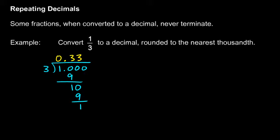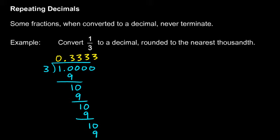We bring down this 0. How many times does 3 go into 10? Three times. We multiply: 3 times 3 is 9. We subtract. You can see we're doing the same thing over and over. 3 goes into 10 three times. We'd multiply 3 times 3 and get another 9. These 3's would go on forever — this pattern would continue. We'll just put three dots there indicating that it continues.